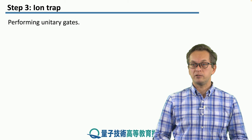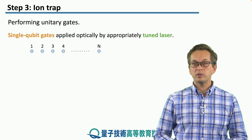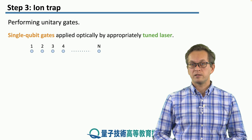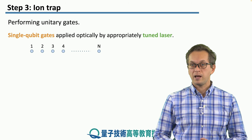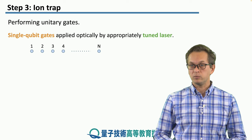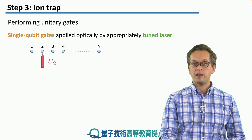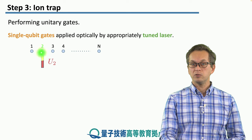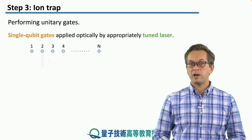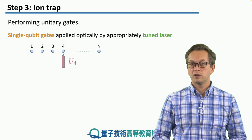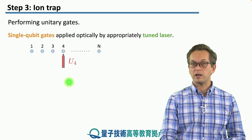How do we perform unitary gates? This is where we will see why we need a lot of lasers. For single qubit gates, this is quite straightforward. We need to choose a properly tuned laser and shine it at the atom on which we wish to perform the unitary gate. For example, if you want to apply a unitary on ion 2, we just shine the laser on ion 2. If you want to apply a unitary on ion 4, we switch off the previous laser and shine a new laser at ion 4.